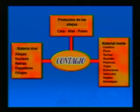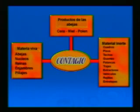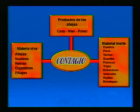Es una enfermedad muy importante, por lo que hay que evitar el contagio. ¿Cómo se puede dar el contagio? Por material vivo: abejas, núcleos, reinas, enjambres o pillaje. Los principales son los núcleos y el pillaje. También con la cera, con la miel y el polen se produce contaminación. Y con materia inerte como pisos, techos, guantes, palancas, trajes, extractores, vehículos y rejillas también son importantes.